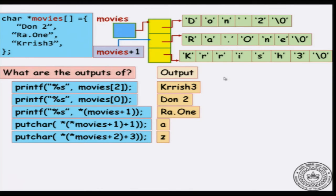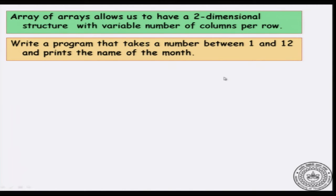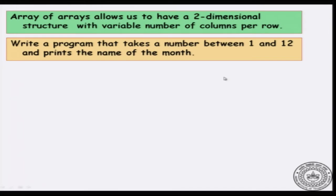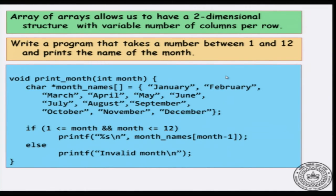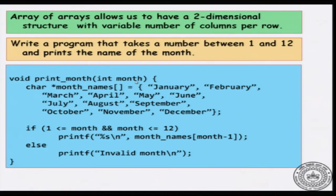Array of arrays allows us to have a two dimensional structure with different number of elements per row, and this is the advantage that it has. Let us say that we want to write a very natural program which takes a number between 1 and 12 and prints out the month name corresponding to that number. We want to store the months, and the problem is different months have different lengths. We right now saw a solution to this problem — to store arbitrary length strings in one structure, we would make an array of arrays.